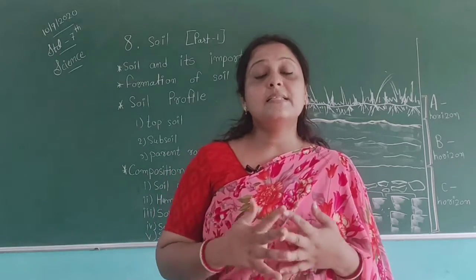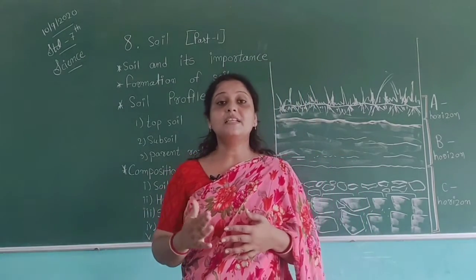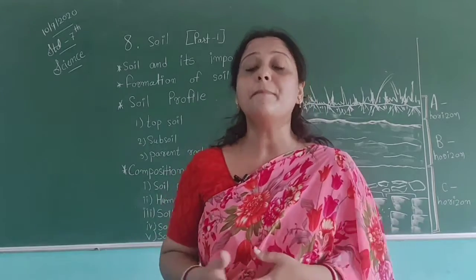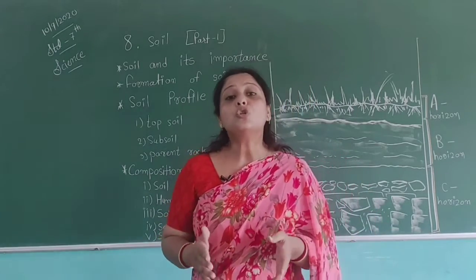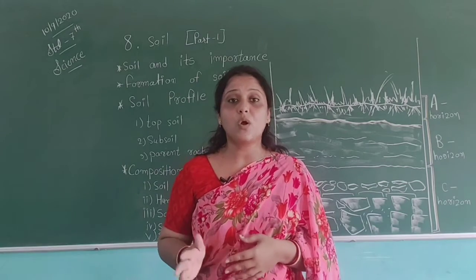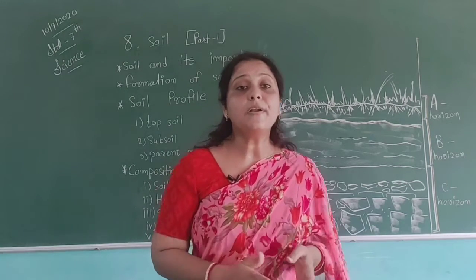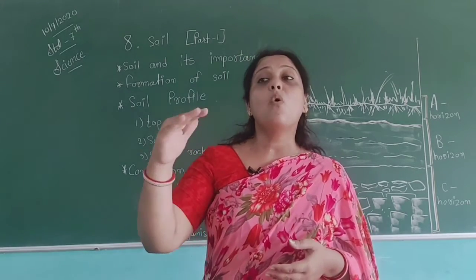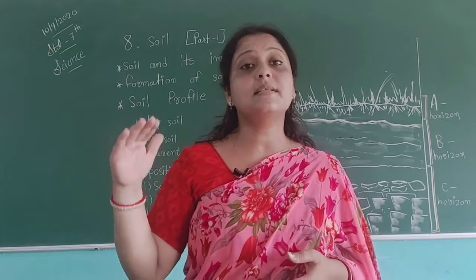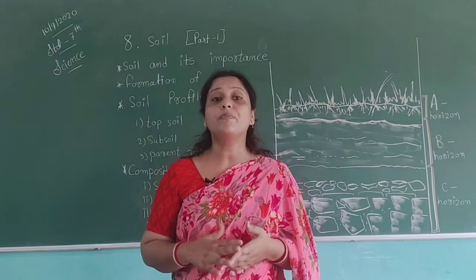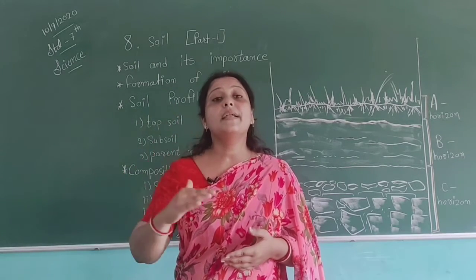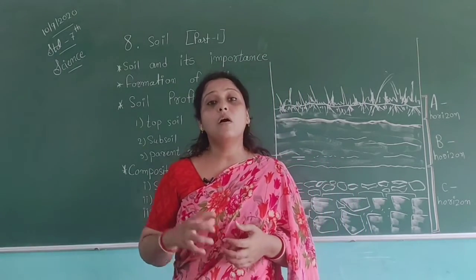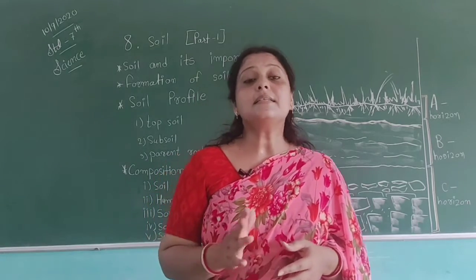Soil is defined as the uppermost layer of the earth's crust in which plants grow. Just as we have different climate and weather conditions at different places, we also have different soil particles from one place to another. Soil has layers — the first top layer is where plants and trees grow, and the top layer always has fertility.